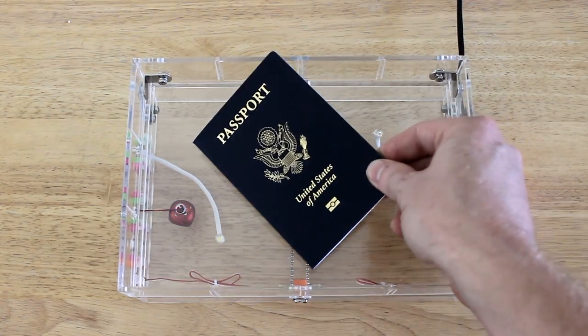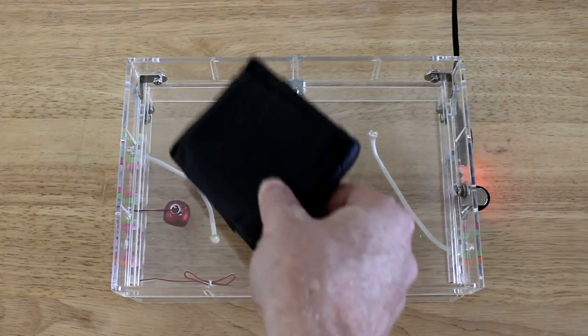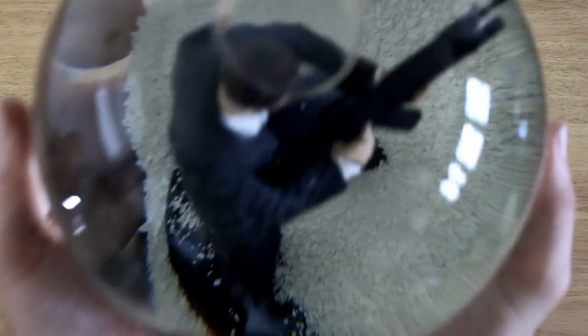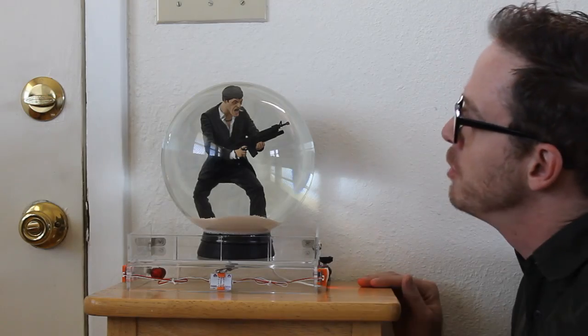Then put your passport, keys, phone, wallet, or giant homemade snow globe featuring a likeness of Al Pacino as Tony Montana in Scarface inside. Hello little friend.